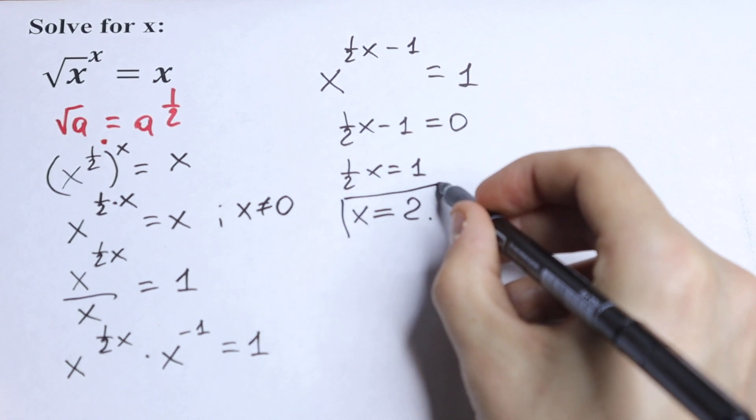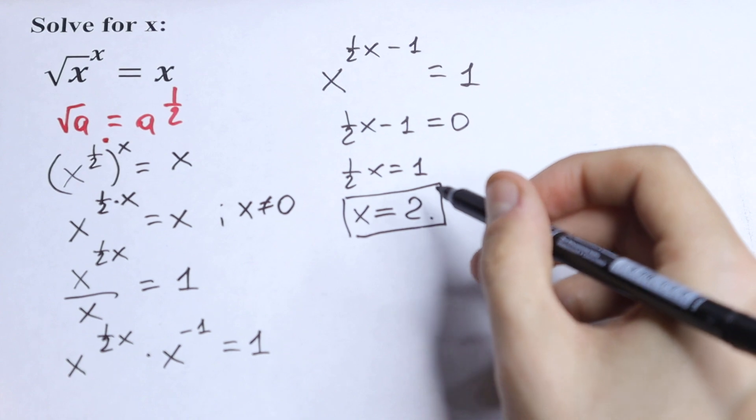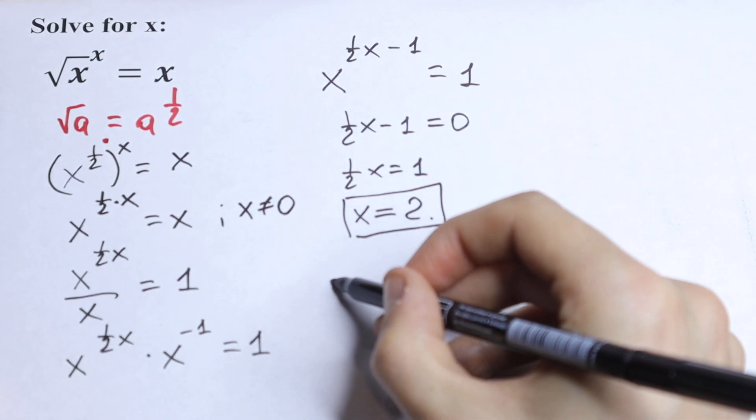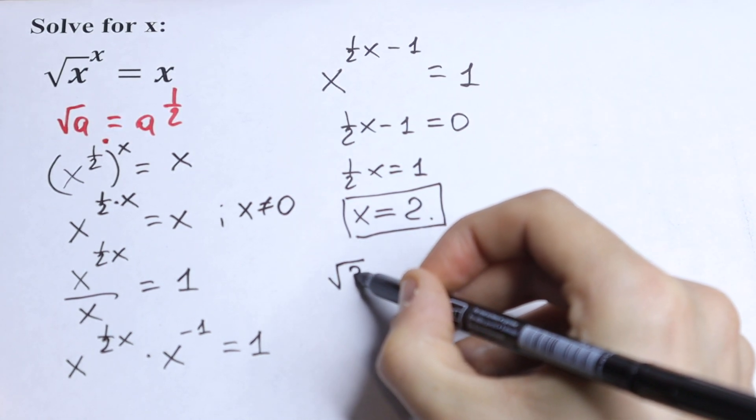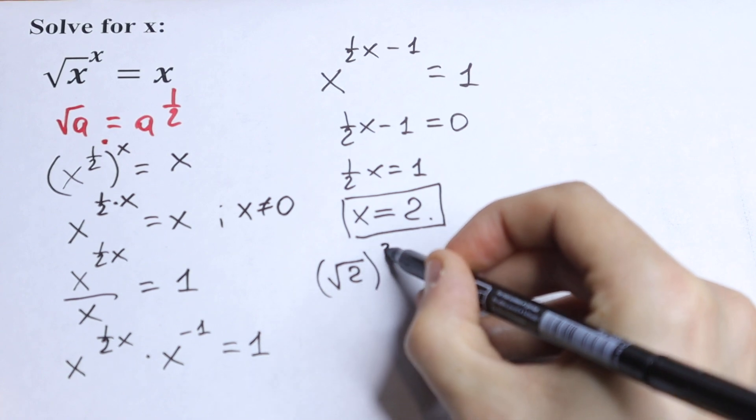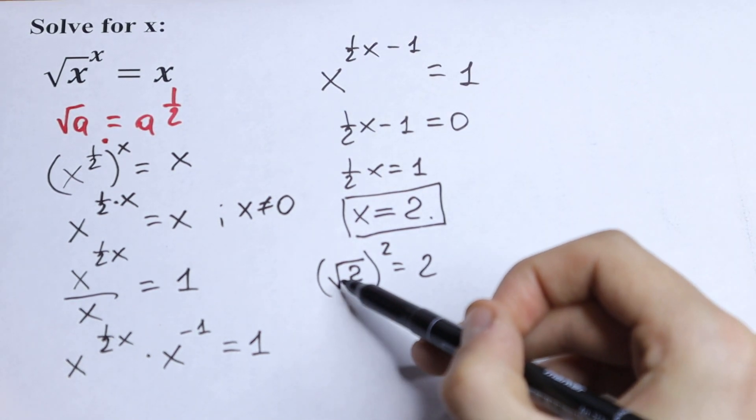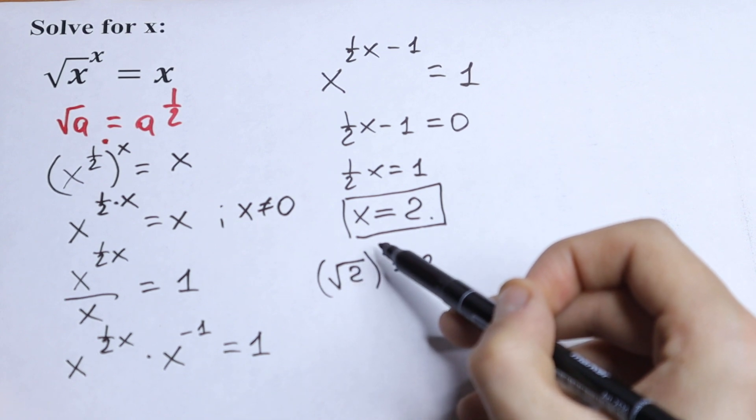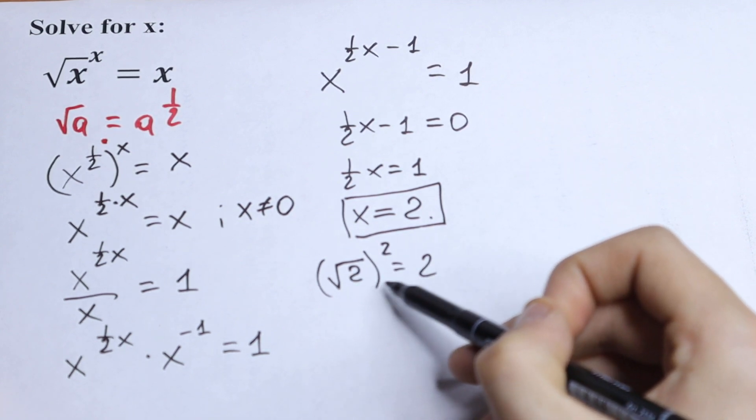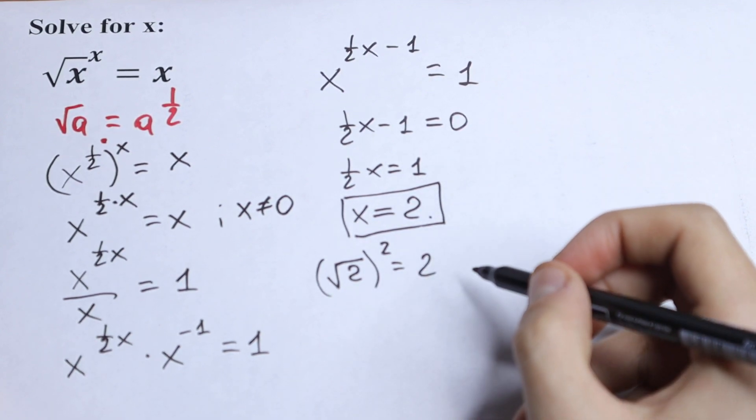And this is our first root. We can check it real quick. We can write this as √2 to the second power equal to 2. And let's check it real quick. Of course, if we write √2 to the second power, we will have our 2 equal to 2, which is correct.